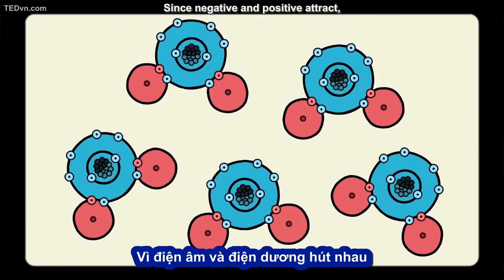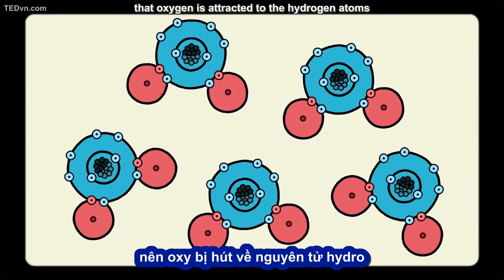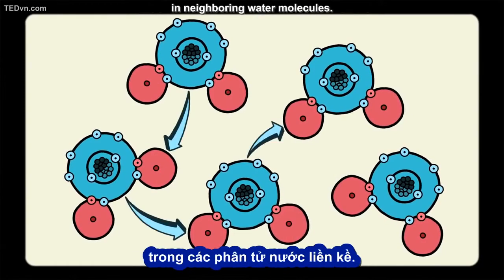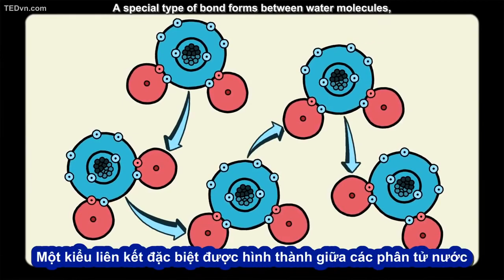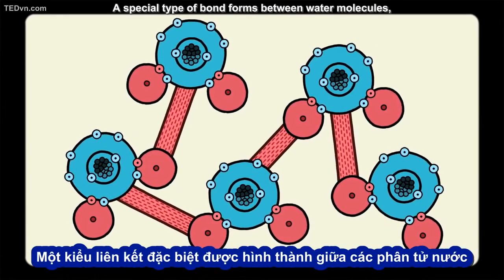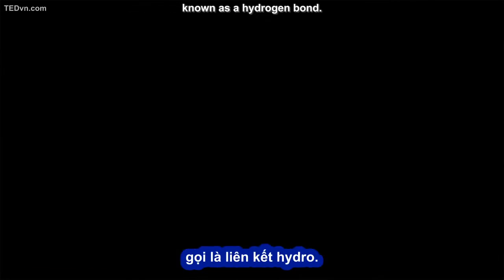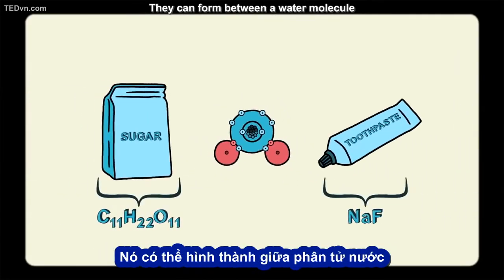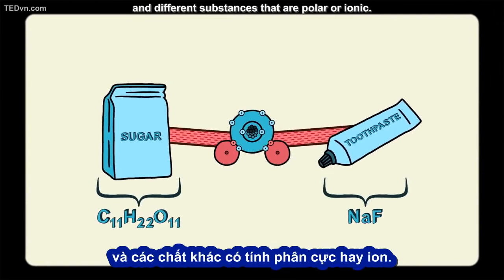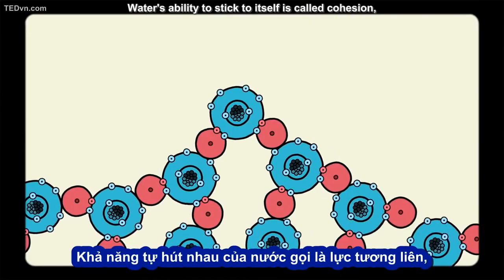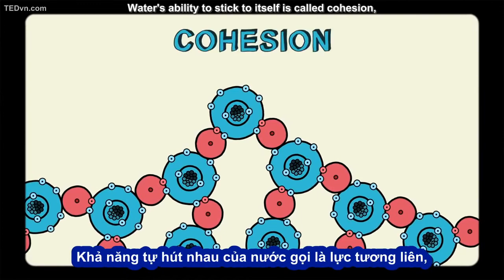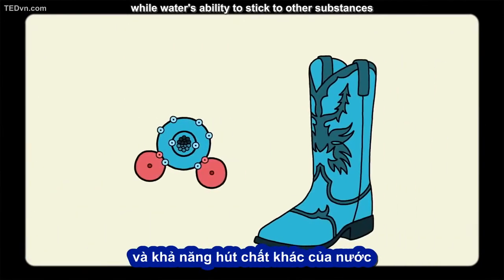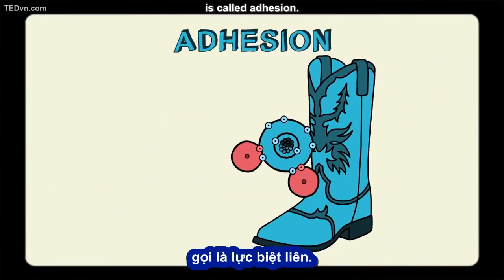Since negative and positive attract, that oxygen is attracted to the hydrogen atoms in neighboring water molecules. A special type of bond forms between water molecules known as a hydrogen bond. Hydrogen bonds don't just happen in water either — they can form between a water molecule and different substances that are polar or ionic. Water's ability to stick to itself is called cohesion, while water's ability to stick to other substances is called adhesion.